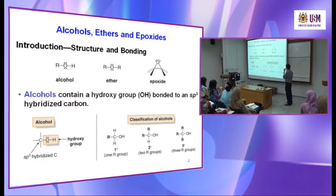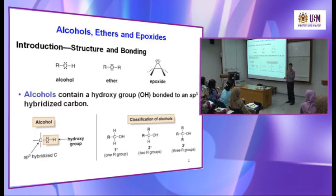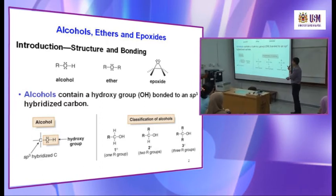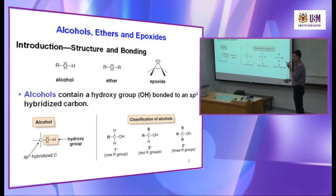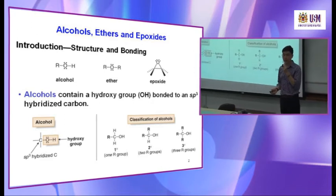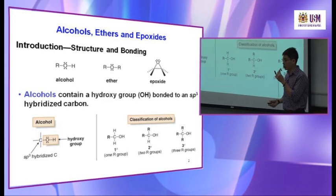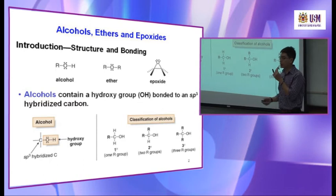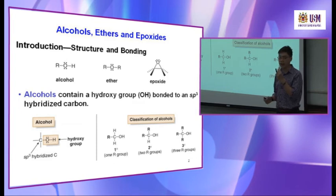Then we are going to study the epoxide. Epoxide is also one form of ether, with the only difference being its triangle shape — a three-membered ring. Alcohol contains a hydroxyl group O-H bonded to an sp3-hybridized carbon, just like an alkane. It could also be bonded to an sp2-hybridized carbon, which we call an enol, or to an aromatic compound like benzene, which we call phenol. These are the three types of alcohol.